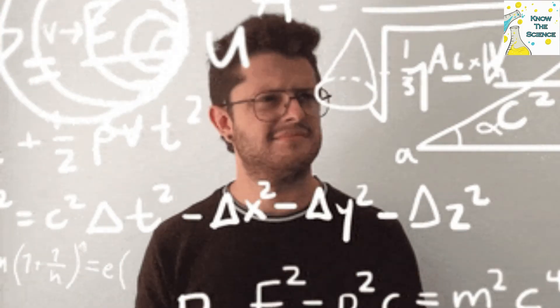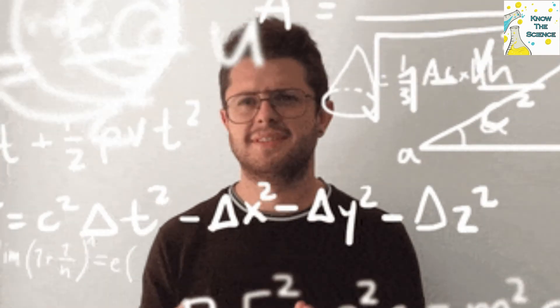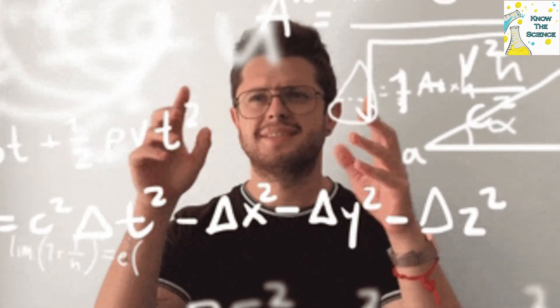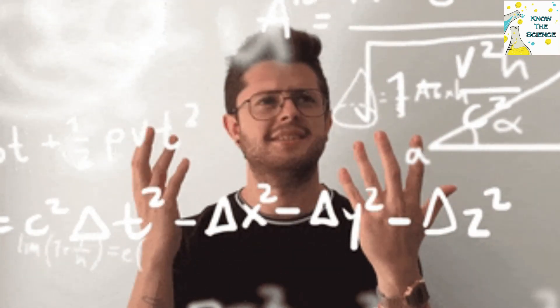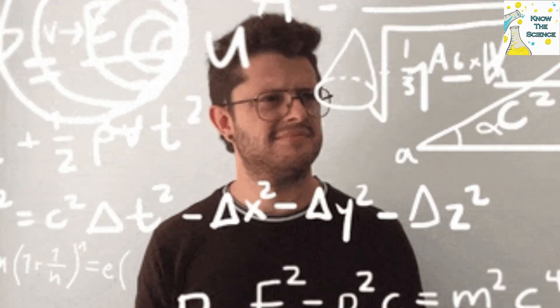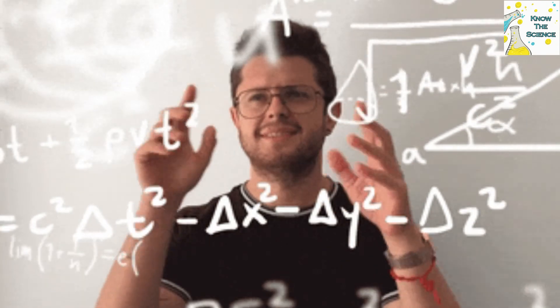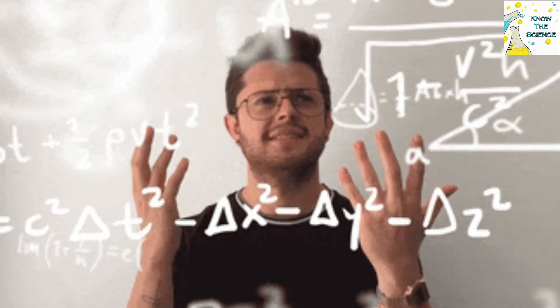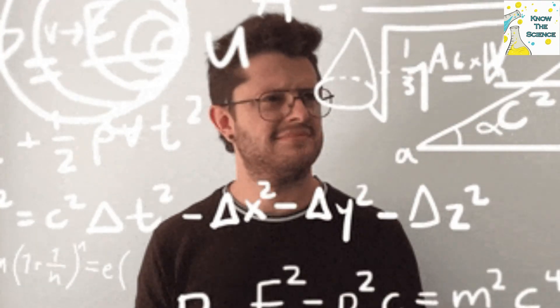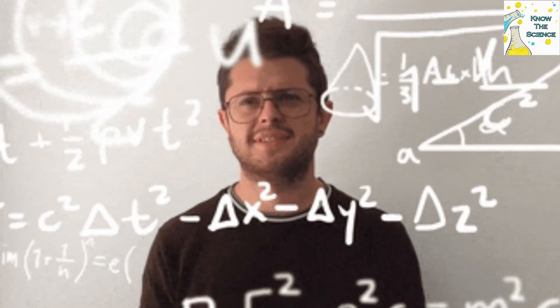So which theory is correct? It turns out that both of them are. Convection and the ice sheet's rebound effect are both causing some of the decrease in gravity around Hudson Bay.